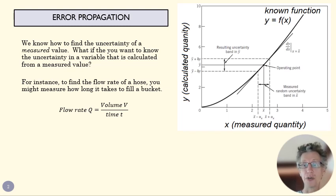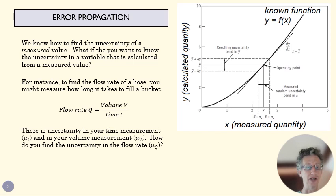The process by which we do that is called error propagation, where we move from finding an uncertainty in time and an uncertainty in volume. Both of these might involve random uncertainties and systematic uncertainties. So we want to find the total uncertainties in each of those and then turn that into an uncertainty in the flow rate. That's error propagation.